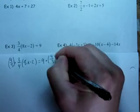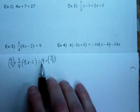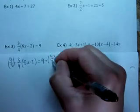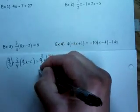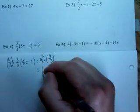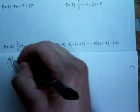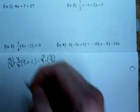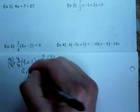Notice how on the other side, this 9 is divisible by this 3. 3 goes into 9 3 times, so 3 times 4 is 12. This 4 and this 4 reduce, this 3 and this 3 reduce, and you have 8x minus 2.